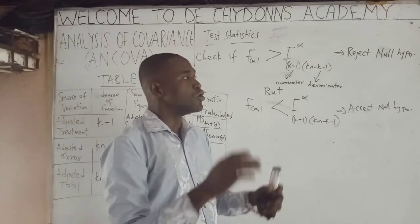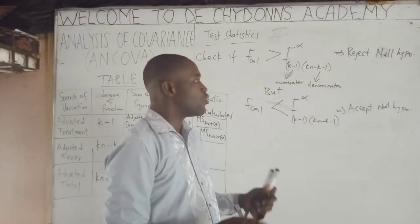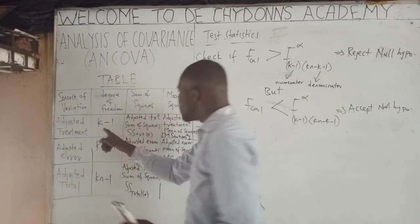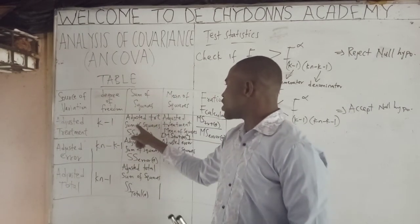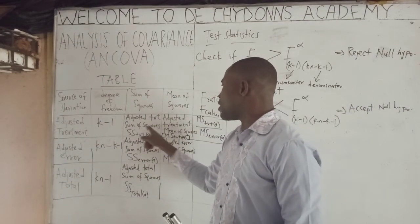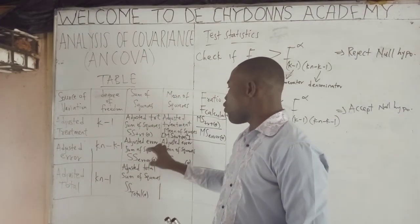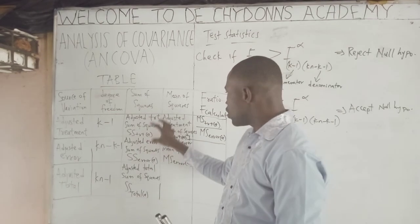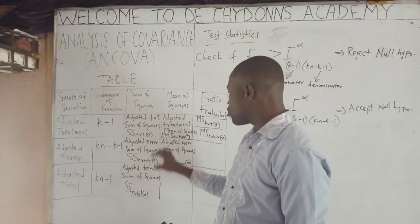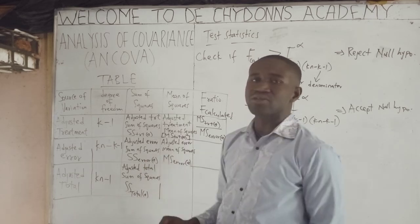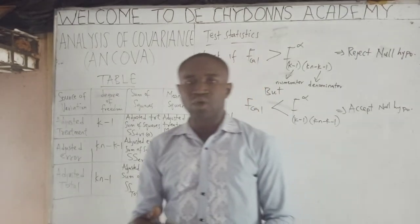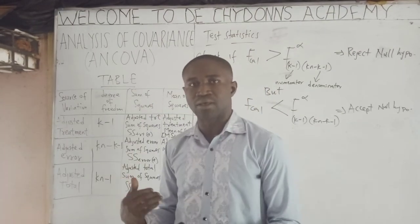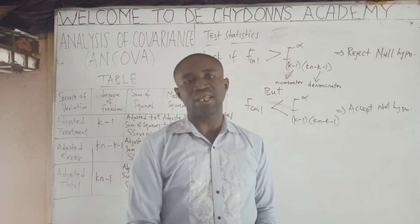In the next video, we will see the formulas. All these terms — adjusted treatment sum of squares, adjusted error sum of squares — we will see their formulas so that we can use them to solve questions on this topic. See you in the next video.